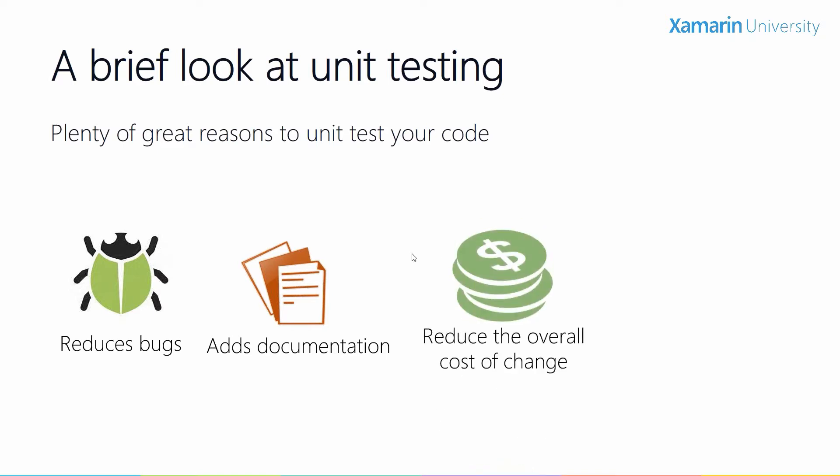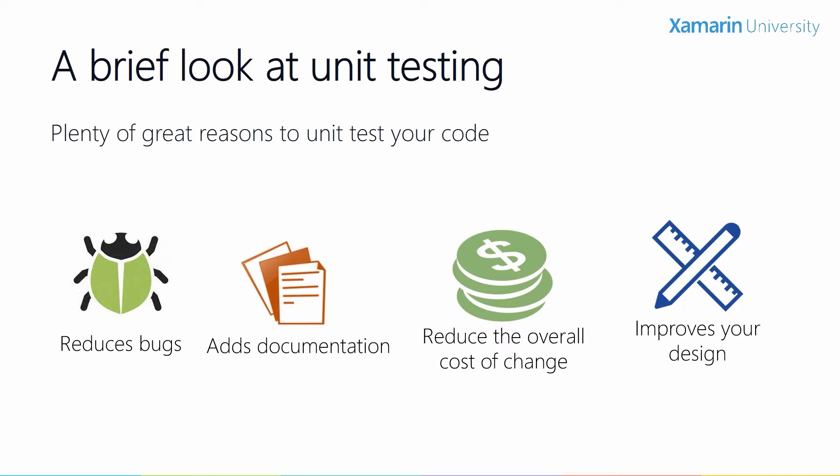Unit tests can also reduce the cost of change. Code, particularly shared code, tends to be refactored, updated and changed over time. This reduces the fear a developer has about making changes because they don't completely understand the code they're changing. Unit tests are an essential part of validating these changes and ensuring that problems introduced by changes are caught earlier. Finally, adding unit tests can improve your app's design and architecture, because writing them forces you to step back and think about what each method is supposed to do. When a unit test is hard to write, it often means the method is too complex with too many side effects and should be refactored to simplify it.